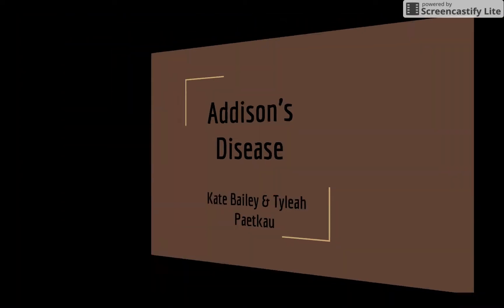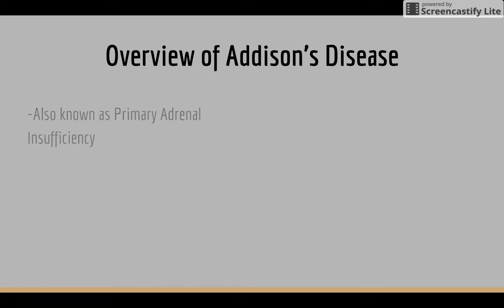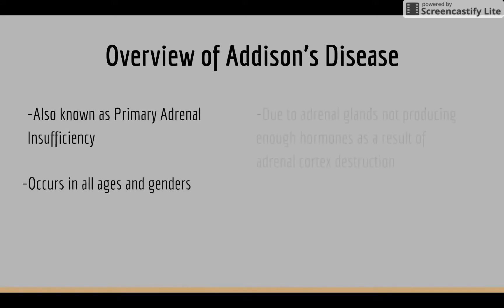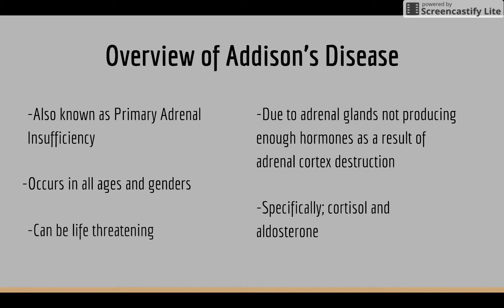Addison's disease — a general overview. It is also known as primary adrenal insufficiency. It occurs in all age groups and affects both genders. The adrenal glands do not produce sufficient amounts of certain hormones, specifically cortisol and aldosterone, due to the failure or destruction of the adrenal glands.